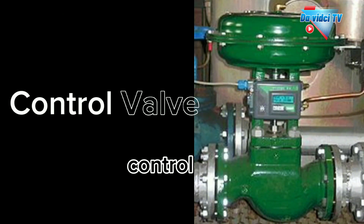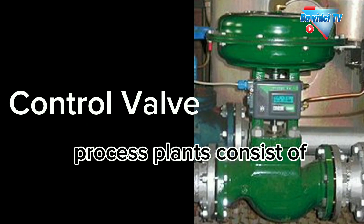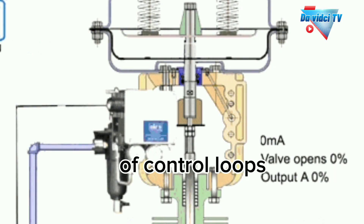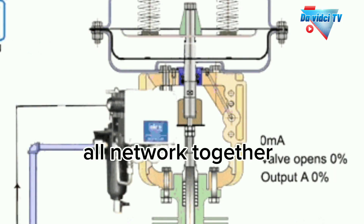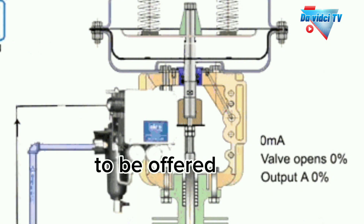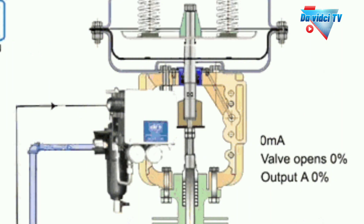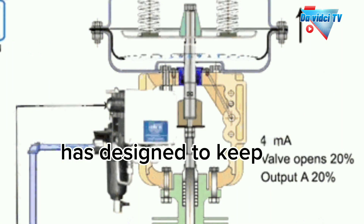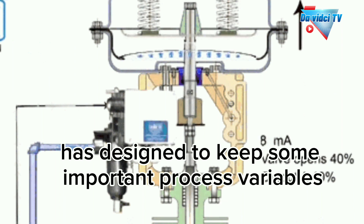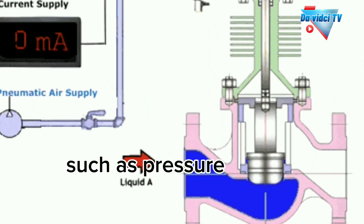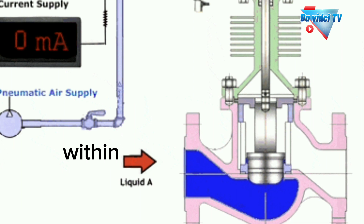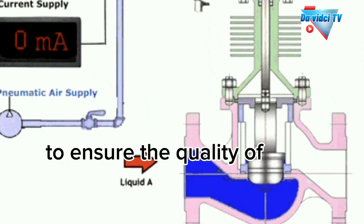Process plants consist of hundreds, or even thousands, of control loops all networked together to produce a product to be offered for sale. Each of these control loops is designed to keep some important process variables — such as pressure, flow, level, temperature, etc. — within a required operating range to ensure the quality of the end product.